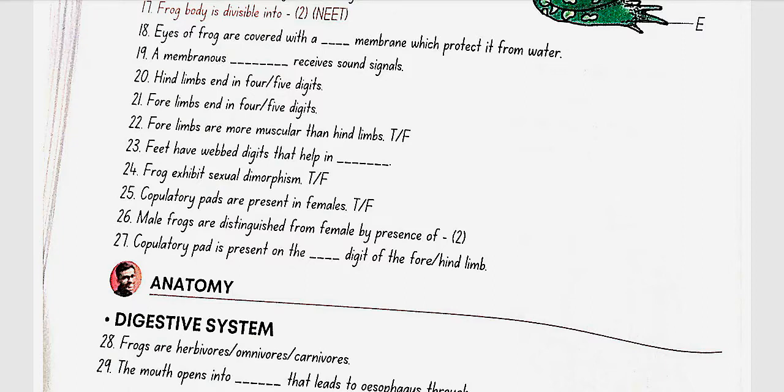Copulatory pads are present in females. No, false. Male frogs are distinguished from female by the presence of sound producing vocal cords and copulatory pad. Copulatory pad is present on the first digit of the forelimb.